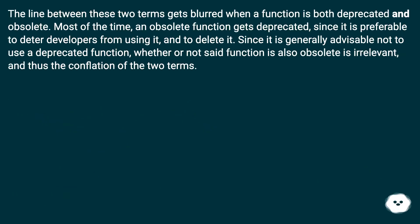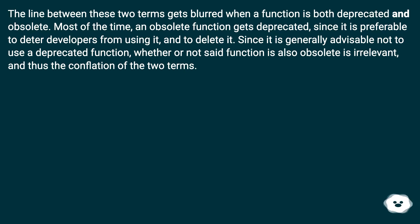The line between these two terms gets blurred when a function is both deprecated and obsolete. Most of the time, an obsolete function gets deprecated, since it is preferable to deter developers from using it before deleting it. Since it is generally advisable not to use a deprecated function, whether or not said function is also obsolete is irrelevant — hence the conflation of the two terms.